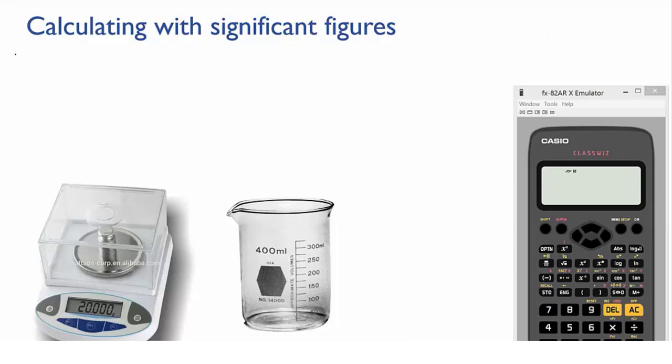For instance, say you measure the mass and the volume of a sample of liquid so that you can calculate its density. You measure the mass on a really accurate balance, so you have that value to 5 sig figs, but you measure the volume using a beaker, so that measurement is 1, maybe 2 sig figs at best.